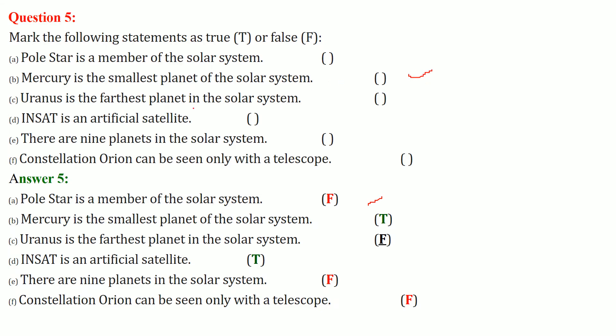Uranus is the farthest planet in the solar system - this is false. We will see the proper diagram in a bit. InSat is an artificial satellite - yes, Indian satellite is an artificial satellite. There are 9 planets in the solar system - no. We will see just in a bit how many are there.